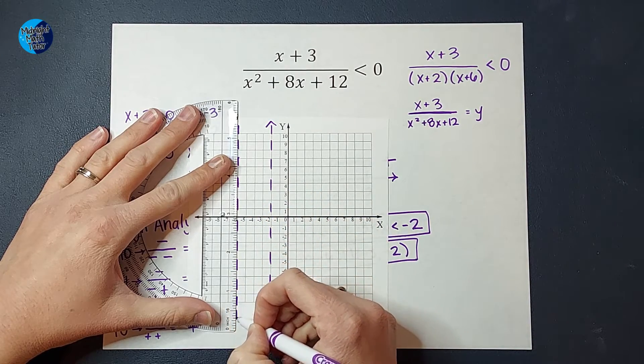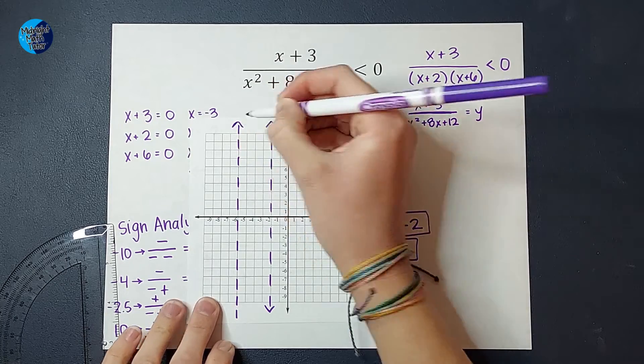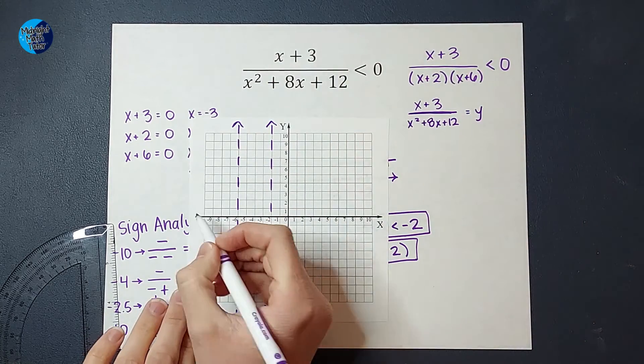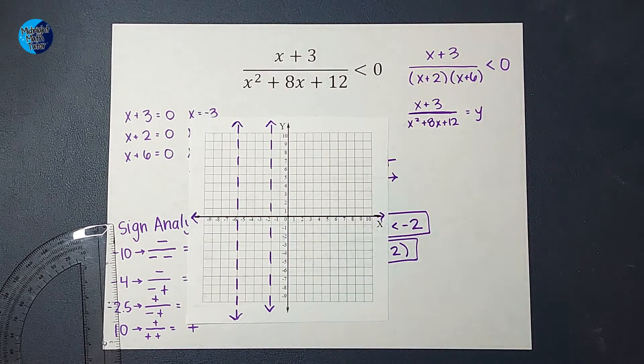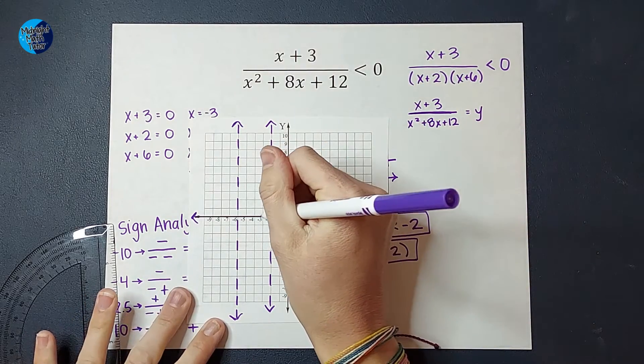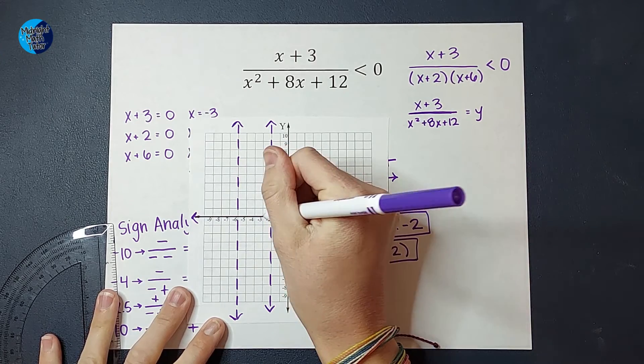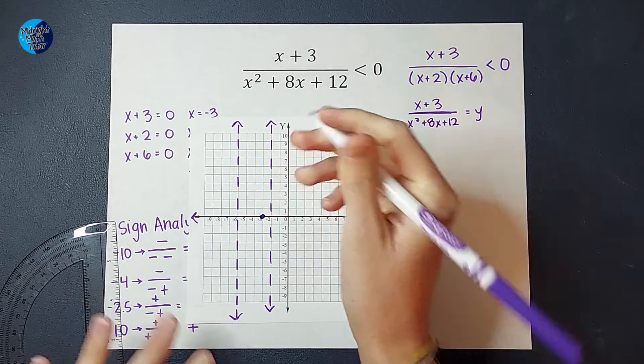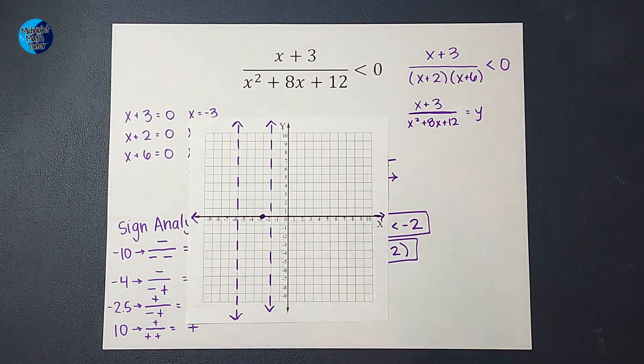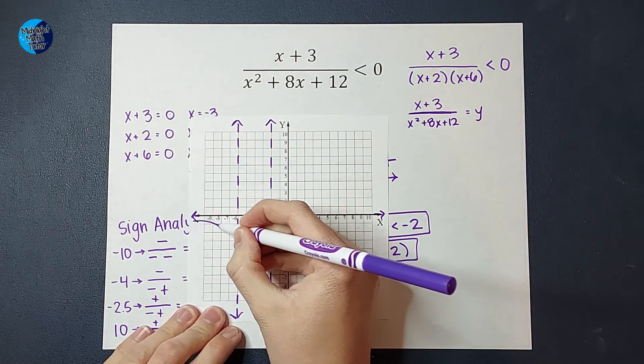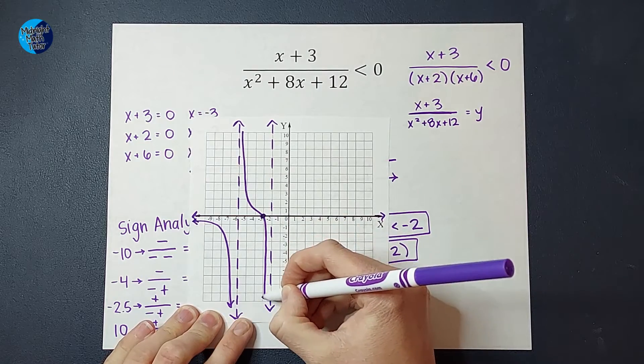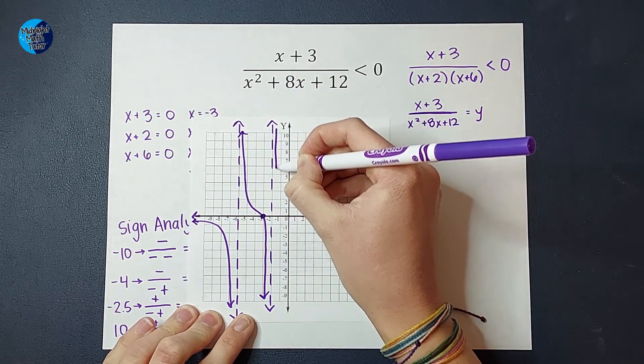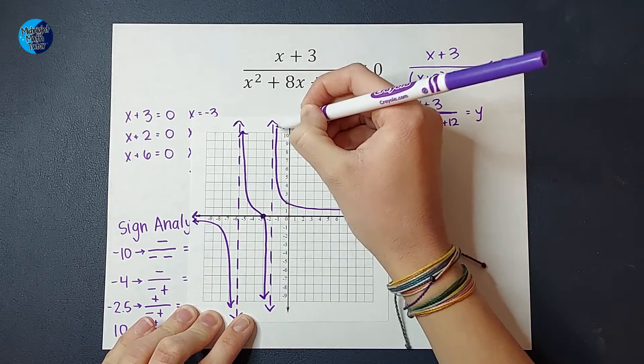I would figure out that my horizontal asymptote is at 0 because the top degree is less than the bottom. So I'd have a horizontal asymptote there. And then I would figure out that my x-intercept is by setting this equal to 0. And I would figure out that it is at x, sorry, at negative 3. And then by applying what I know about graphs and asymptotes and things, I would figure out that this graph looks something like this. Like that. Okay.